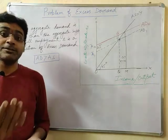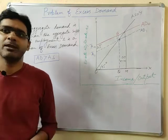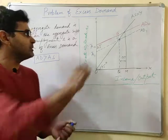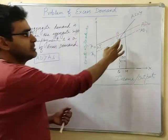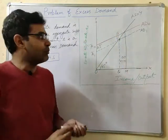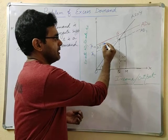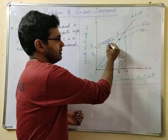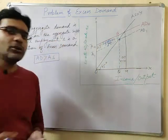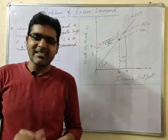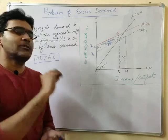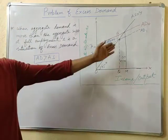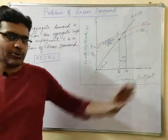This situation will lead to excess demand and will create inflationary pressures over the economy. The gap between points F and G, as seen in the diagram, is known as the inflationary gap. It is called inflationary because it sets in motion forces which cause inflation or price rise in the economy.